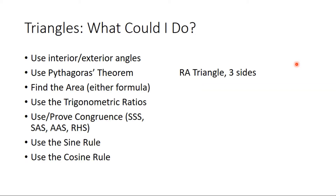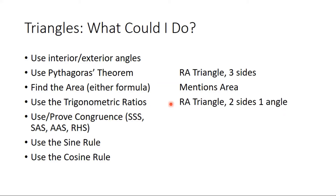With an area question I would expect the word 'area' to come up, or some indication like units given in centimetres squared. For the trigonometric ratios, I'm again looking for a right angle triangle and also two sides and one angle — that's the setup for SOHCAHTOA.